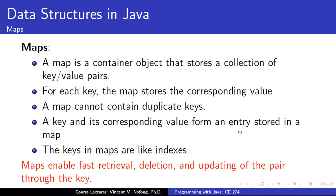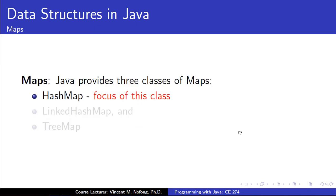Keys enable fast retrieval, deletion, and modification of content in the map. Java provides great classes of maps we can use: we have the HashMap, the LinkedHashMap, and the TreeMap. However, in this lecture we only look at HashMaps. Students are advised to learn the LinkedHashMap and the TreeMap on their own.